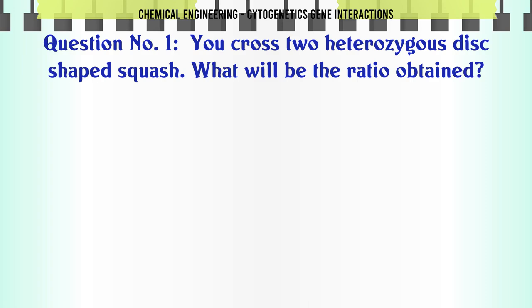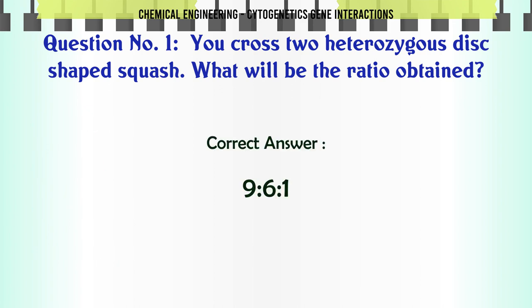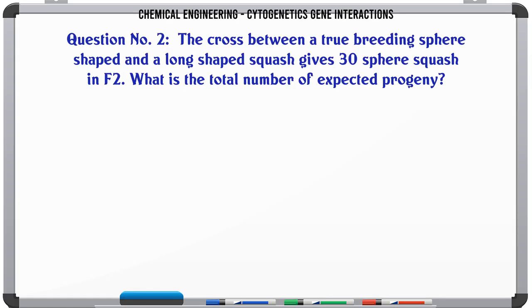You cross two heterozygous disc-shaped squash. What will be the ratio obtained? A. 1 to 1, B. 3 to 1, C. 9:3:3:1, D. 9:6:1. The correct answer is 9:6:1.